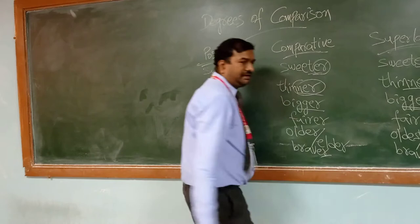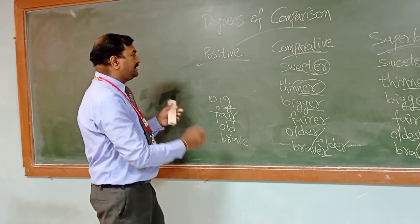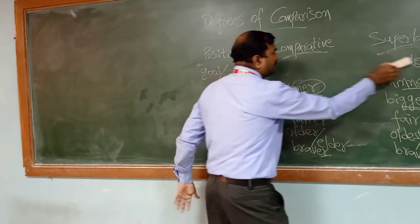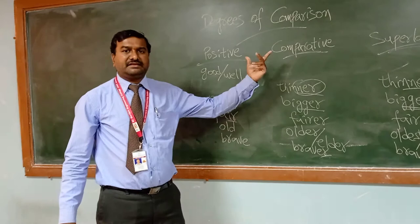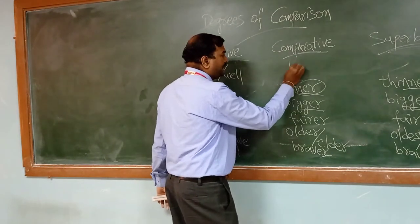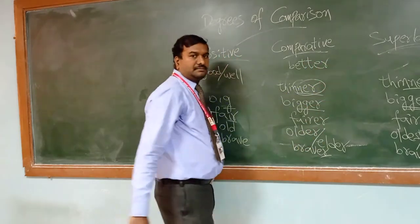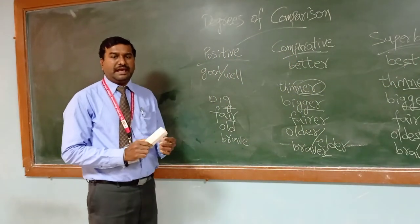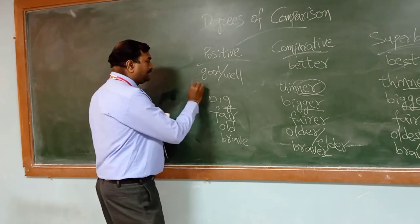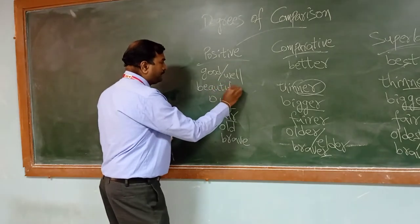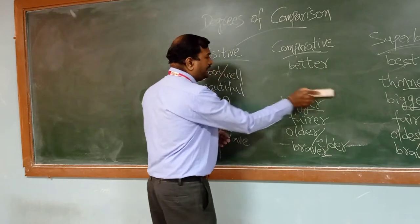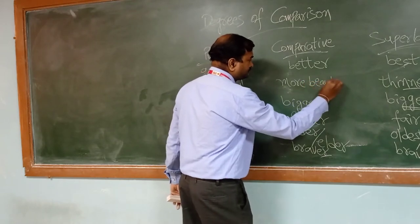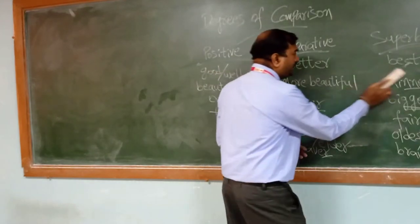We also have words that change completely — irregular forms. For 'good' or 'well', the comparative is 'better' and the superlative is 'best'. We can also find polysyllabic words like 'beautiful'. For polysyllabic words, the comparative requires the word 'more' — 'more beautiful' — and the superlative becomes 'most beautiful'.